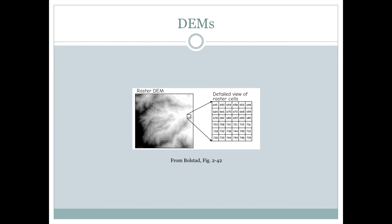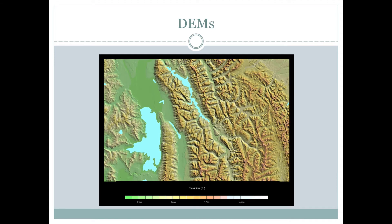We can use this for different sorts of analysis, but for display, we often display digital elevation models like this. This is actually two different grids combined. One of the grids is showing changes in color — the hue and the saturation of those colors — based on the elevation taken directly from the digital elevation model.